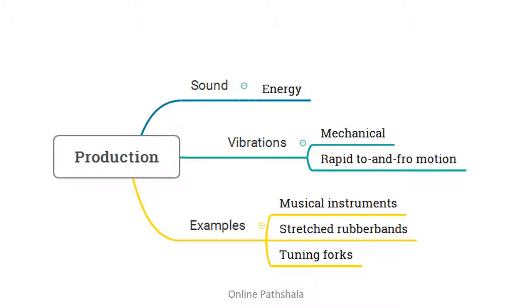We learned that sound is a form of energy that produces a sensation of hearing. Sound is produced by mechanical vibrations — vibrations being the rapid to-and-fro motion of something like a string. We looked at a range of musical instruments and explored the sources of sound from each. We also looked at a stretched rubber band and tuning forks as examples of things that produce sound.